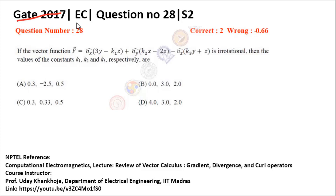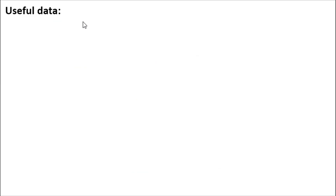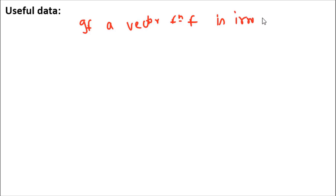This question was asked in GATE 2017 Electronics and Communication, Paper Set 2, where you are given a vector function F that is irrotational and need to find constants k1, k2, and k3. The NPTEL reference for this question is 'Computational Electromagnetics' by Professor Uday Khan Koji, from the lecture on review of vector calculus: gradient, divergence, and curl operators. The key useful data is: if a vector function F is irrotational, then its curl, del cross F, should be equal to zero.